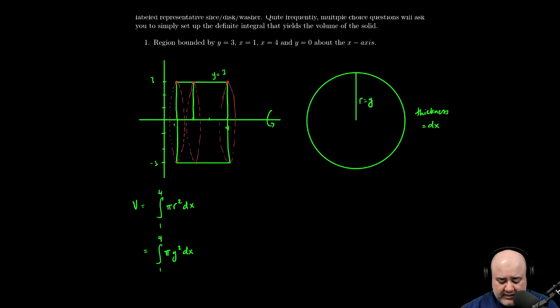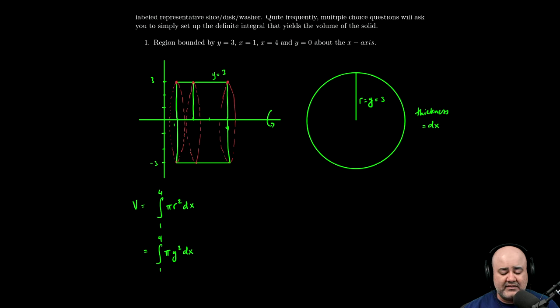In this problem, we know that the radius is always going to be three. And that's something that's true of a cylinder. If you slice a cylinder, no matter where you slice it, it's always going to have the same radius throughout.